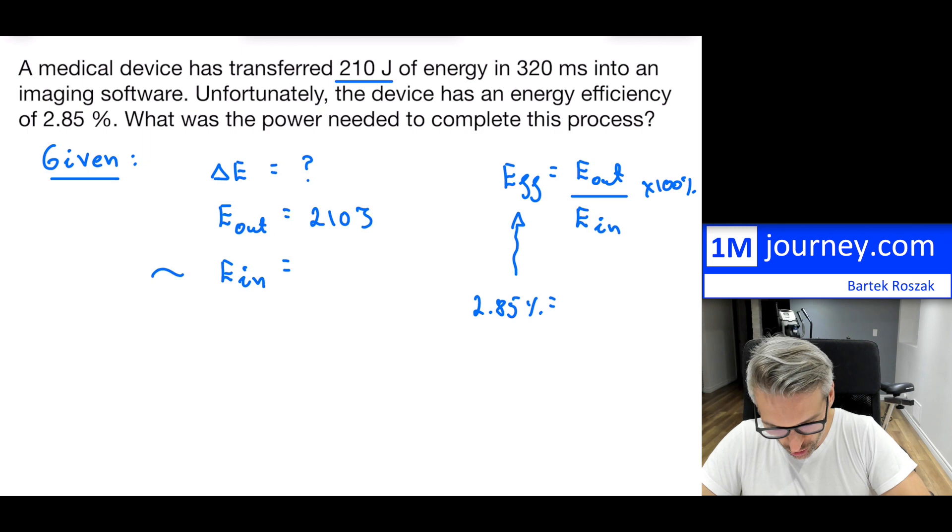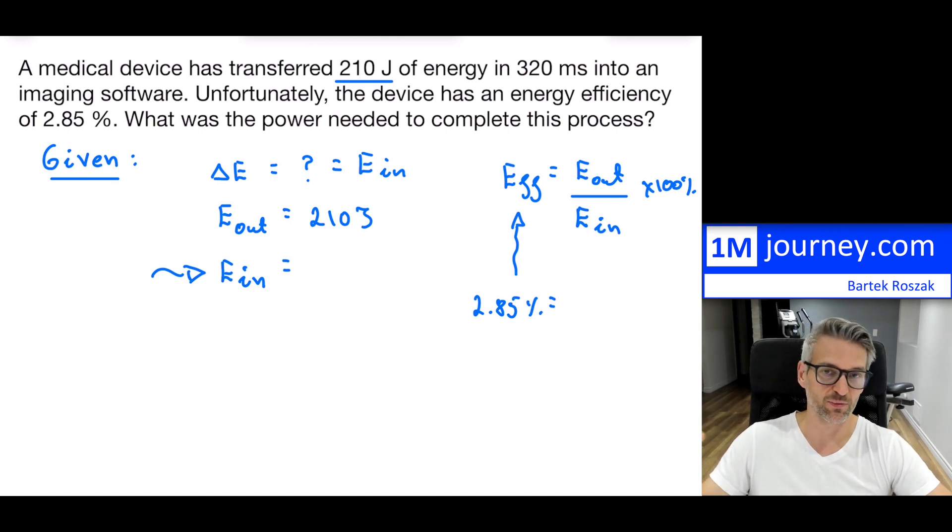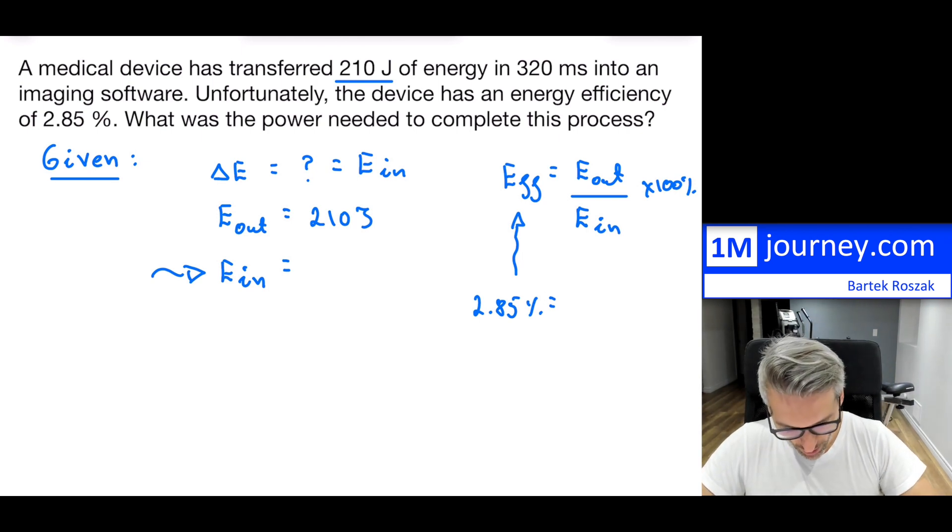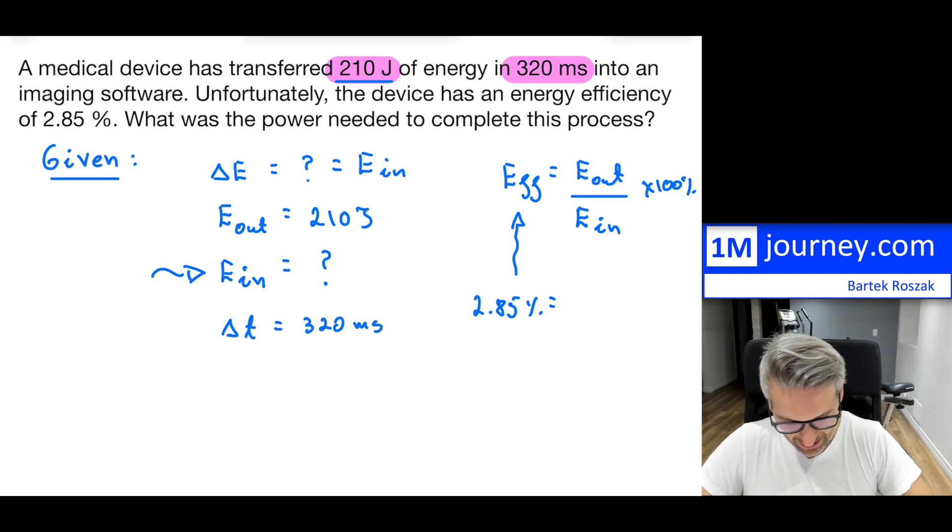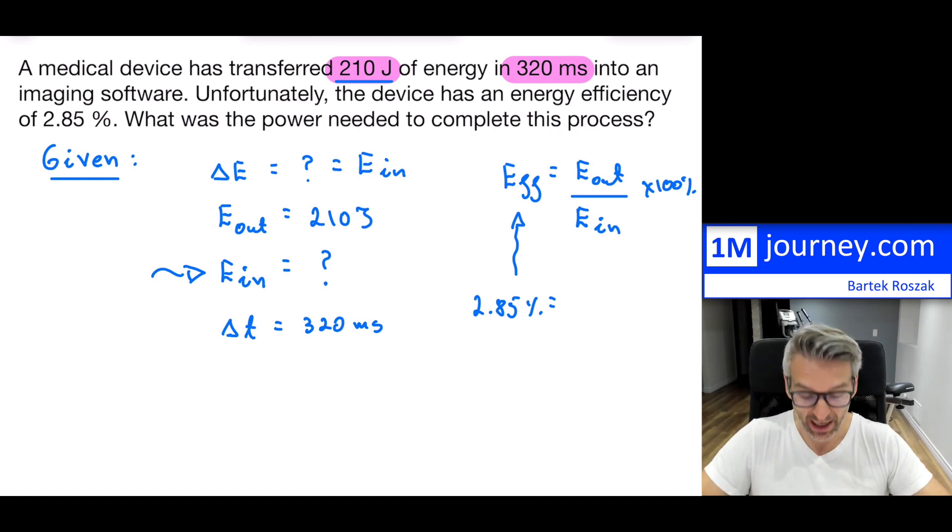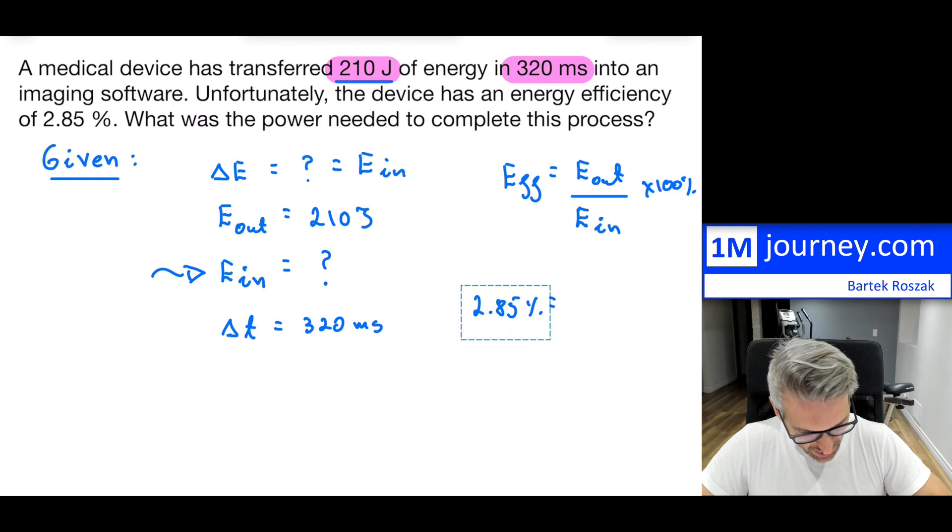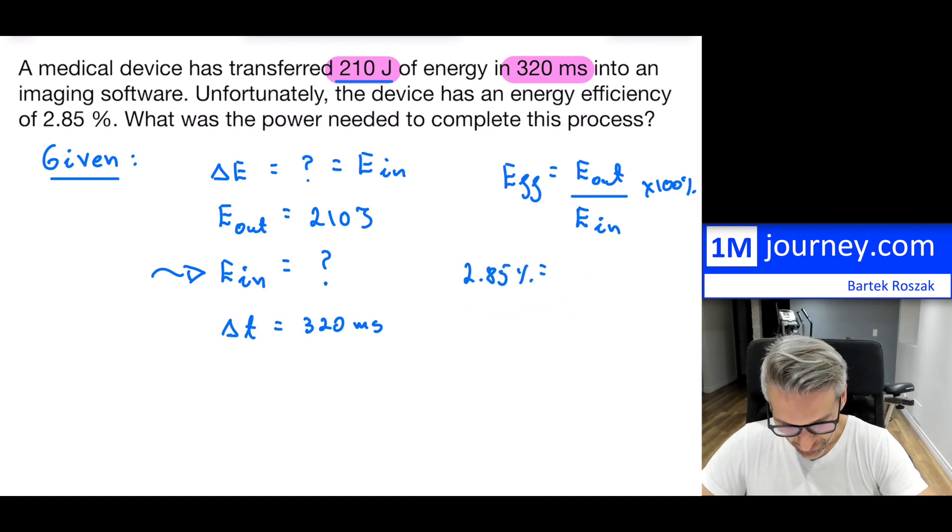If you go back to the efficiency equation, efficiency equals the energy out, the desired output energy, that you have. But here is the energy that you had to input into the process, and this was always as a percent. They're telling us that this thing is only 2.85%. So this is the output. You've utilized 210 joules to create this imaging, whatever you had to do there. And that's now what makes this a little bit trickier. So what we want is the total amount of energy used, and that's gonna be our change in total because we have to utilize that much from electrical energy and then transfer it in that process.